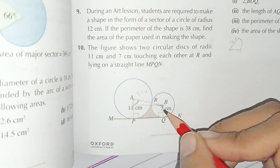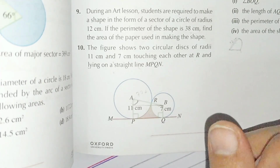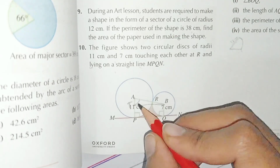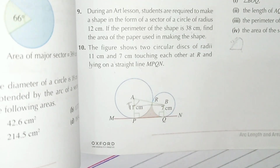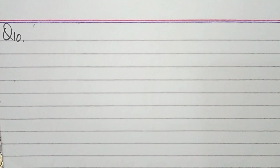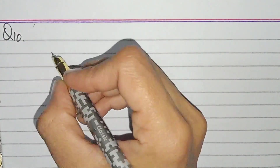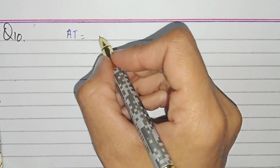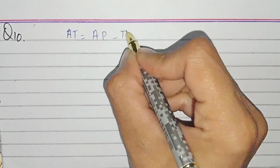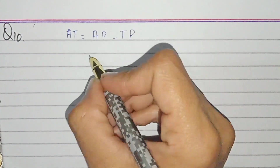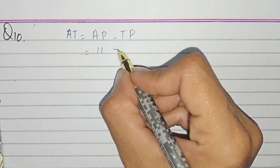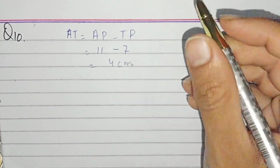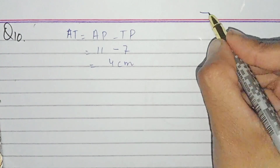By subtracting 7 from 11 we get the length of one side, AT = 4 centimeters. By adding 11 and 7 we get the length of the hypotenuse AB.